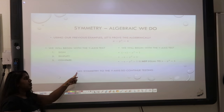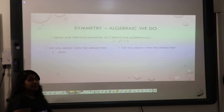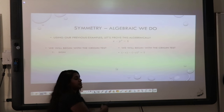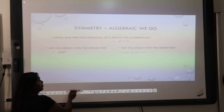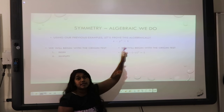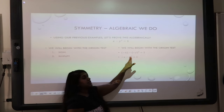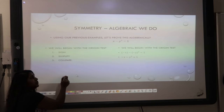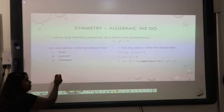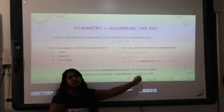Since it does not have symmetry with the y-axis, I'm going to continue testing. My final test is the origin test. I changed both signs — my x and y are going to be in parentheses and made negative. All other function parts stay out of the parentheses. I simplify — negative x stays negative x, but negative y squared is going to become positive. A negative and a positive means it's still going to be minus. I compare it to the original and it is not equal. Therefore, I have tested the x, the y, and the origin. The only one that was true was my x-axis. So we write our complete sentence: 'The graph is symmetric with respect to the x-axis.'